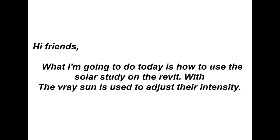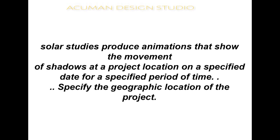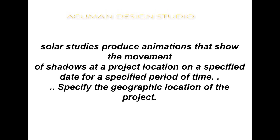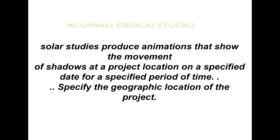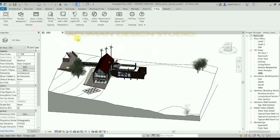Hi friends. What I am going to do today is how to use the solar study in Revit with variation, which is used to adjust the intensity. The solar study produces animations that show the movement of shadows at a project location on a specified date, for a specified period of time. Specify the geographic location of the project.